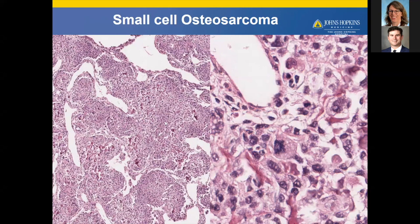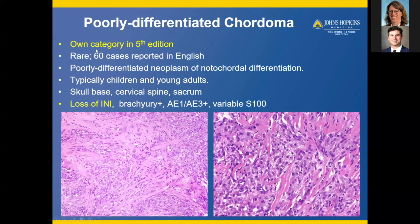Poorly differentiated notochordoma is its own category in the fifth edition — very rare, with 60 cases reported in the English literature. It is essentially a poorly differentiated neoplasm with notochordal differentiation, typically in children and young adults in the skull base, cervical spine, and sacrum. Importantly, it has loss of INI1, joining many other tumors now known to have INI1 loss. It has brachyury and keratin expression with variable S100. It's important to recognize this as its own category with INI1 loss, generally occurring in children or younger adults. De-differentiated chordoma is also its own category in the fifth edition — a rare biphasic malignant neoplasm with notochordal differentiation, generally in older adults in the sacrum. It shows conventional chordoma juxtaposed with a high-grade pleomorphic spindle cell sarcoma, and brachyury is often lost in the de-differentiated component.